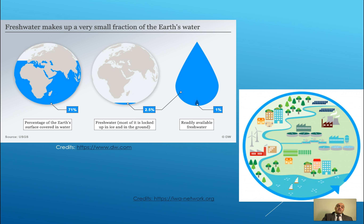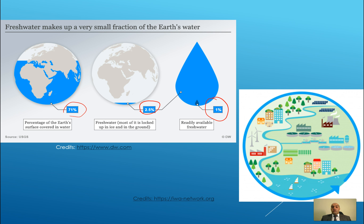If we look at the data, 71% of the Earth's surface is covered by water. Out of this 71%, only 2.5% is fresh water, and most of this 2.5% is locked up in ice and in the ground. So out of 2.5%, only 1% is readily available fresh water — that's rivers and lakes, including streamflow. We can say that having sustainable fresh water is the most important goal, because all other goals are controlled by water availability.